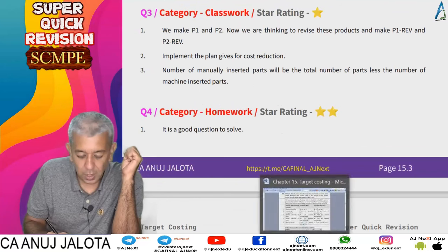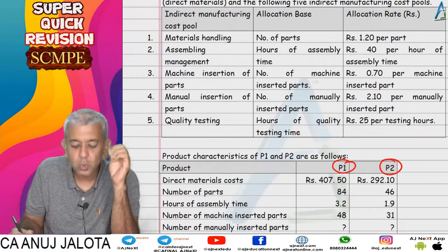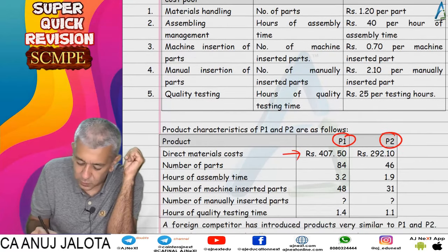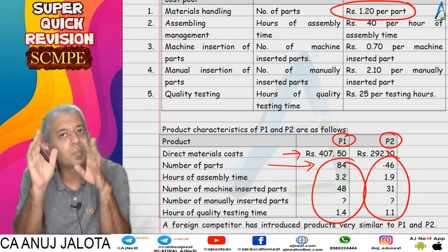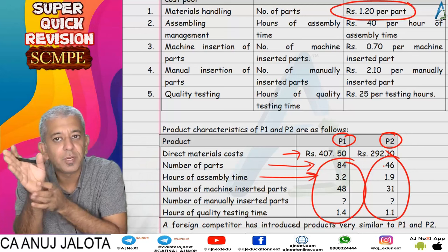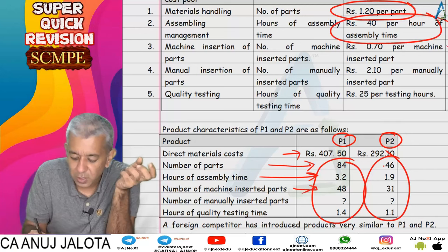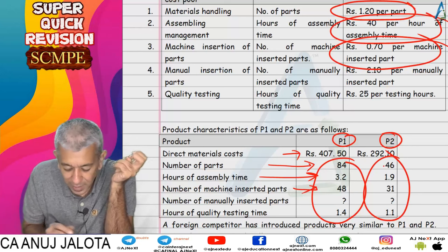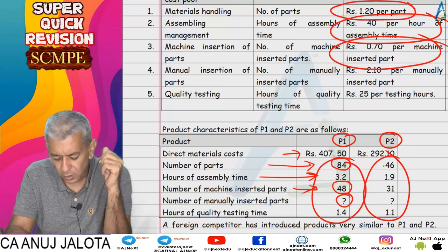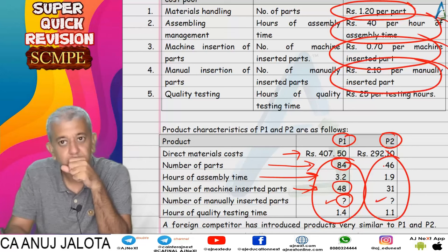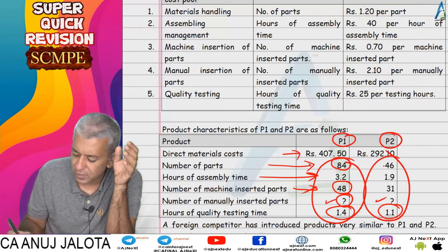Question number three: the company makes two products P1 and P2. Current specifications are given, including direct material and other costs used to compute overheads via activity based costing. Material handling: multiply number of parts by 1.2 per part. Assembly time: multiply hours of assembly per unit by Rs. 40 per hour. Machine inserted parts: multiply by Rs. 0.7 per machine inserted part. Manually inserted parts: total parts minus machine inserted parts, multiplied by Rs. 2.1 per manually inserted part. Quality testing: hours multiplied by rate per testing hour.